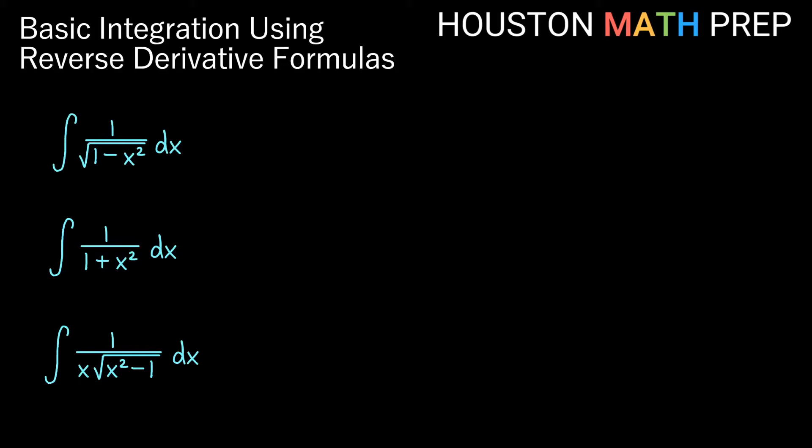And looking at our last three here, you might recognize these as inverse trig definitions for derivatives. So what gives us a derivative of one over the square root of one minus x squared? That would be the inverse sine function. So inverse sine of x plus c here. The derivative of inverse sine of x is one over the square root of one minus x squared.